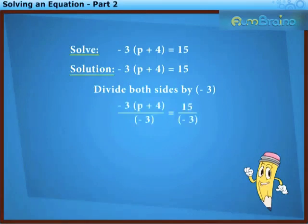We get minus 3 into p plus 4 upon minus 3 is equal to 15 upon minus 3. On simplification, we get p plus 4 is equal to minus 5.